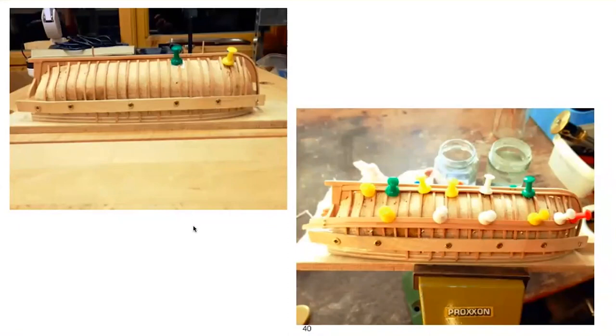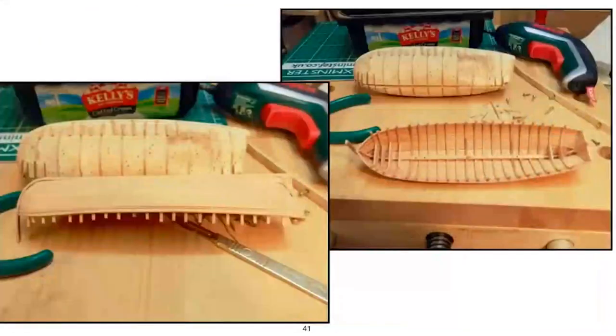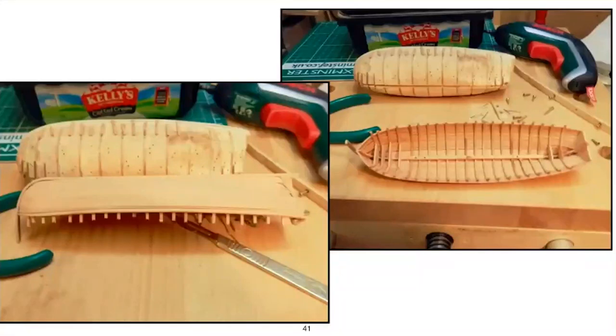I was then able to start planking the boat once the keel had been attached as shown on the right. Here the garboard has been placed, and the sheer and one other plank has also been added. When all was in place, the boat was lifted off the mold. Now it could be fitted out and the hull finally sanded down.